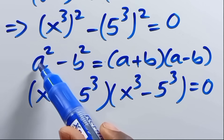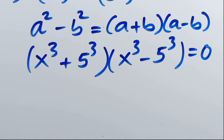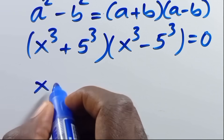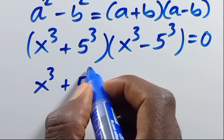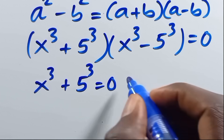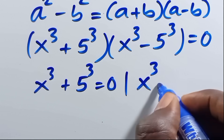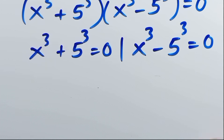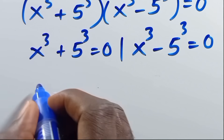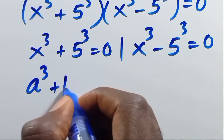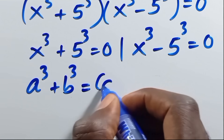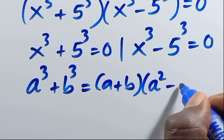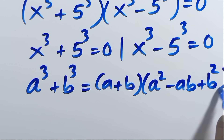Because when we make the comparison, our a is x and our b is 5. For this expression to equal 0, either x to the power of 3 plus 5 to the power of 3 equals 0, or x to the power of 3 minus 5 to the power of 3 equals 0. Recalling from algebra, a cubed plus b cubed equals a plus b, times a squared minus ab plus b squared.